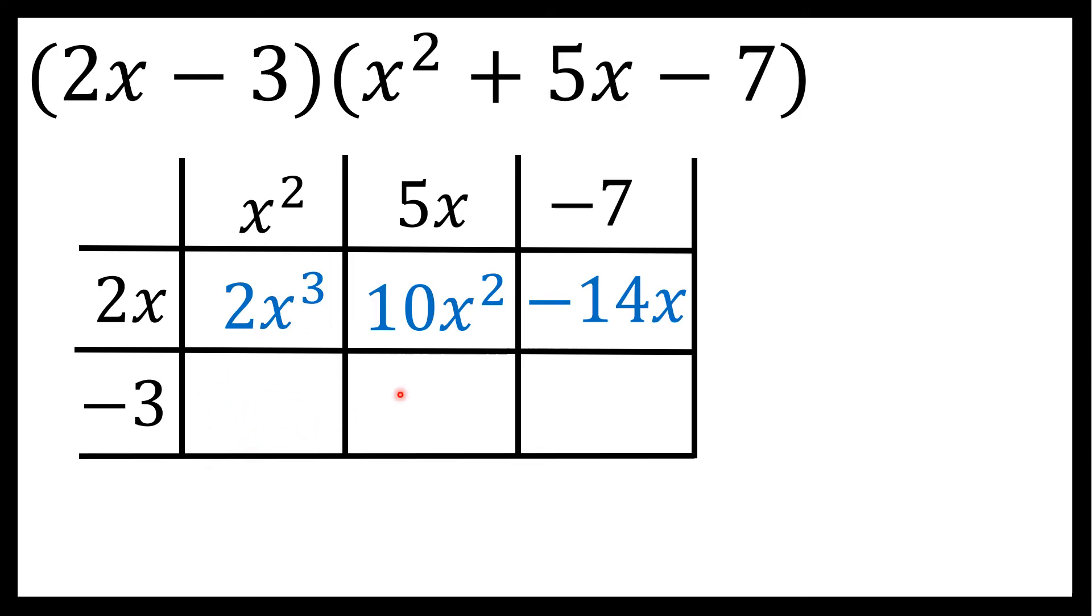To get the numbers that go in the other three boxes, I'll take negative 3 times, first x squared, negative 3x squared. Then negative 3 times 5x, negative 15x. And finally, negative 3 times negative 7, negative times negative is positive 21.